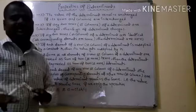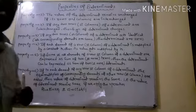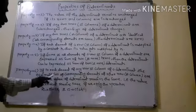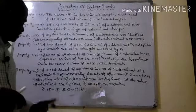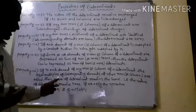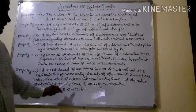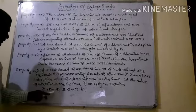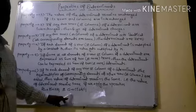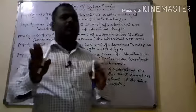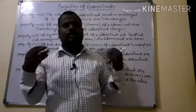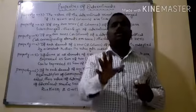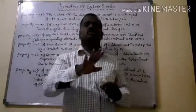The sixth property: if to each element of any row or column of a determinant, equimultiples of the corresponding elements of another row or column are added or subtracted, then the value of the determinant remains the same. We apply the operations Ri → Ri + k·Rj as a row operation, and similarly as a column operation. These are expressed here for knowledge purposes, as they are no longer in the current syllabus blueprint.